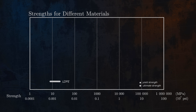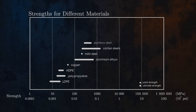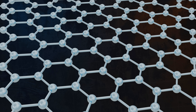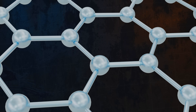Tensile yield strengths are shown for ductile materials, and ultimate compressive strengths are shown for brittle materials. Graphene is the strongest material to have ever been tested. It is a two-dimensional material made up of a single layer of carbon atoms arranged in a hexagonal lattice and linked by strong covalent bonds. Defect-free graphene has an ultimate tensile strength of up to 130 gigapascals, or 19,000 KSI.